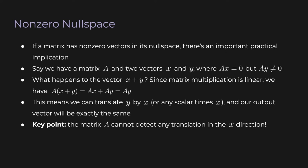On the other hand, if zero is not the only element of the null space, then there's a really important practical implication. Imagine we have a matrix A with two vectors x and y. Let's say Ax equals 0, but Ay is not equal to 0. In this scenario, what would happen if we multiplied A by the vector x plus y? Since matrix multiplication is linear, A times (x+y) equals Ax plus Ay, which equals Ay. This means we can translate y by x, or any scalar times x, and our output vector will be exactly the same. The key point is that the matrix A cannot detect any translation in the x direction — the x direction is a source of ambiguity.